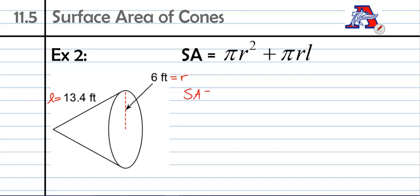So I'm just going to plug everything in here: SA = π(6)² + π(6)(13.4). This is one where we have decimals, so probably not the best idea to leave it in terms of π. That's going to start looking kind of weird. So I think on this one let's just punch it into Desmos.